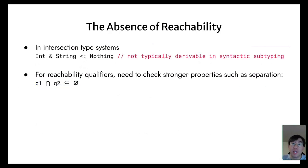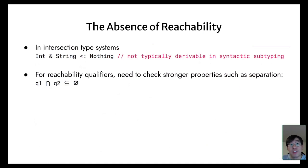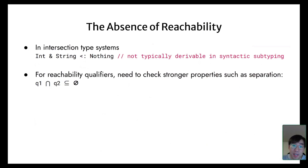In our calculus we can also track the absence of reachability, which is separation. As an analogy with intersection types, this is a stronger property that cannot be derived in typical syntactic type systems. In our system, as a key invariant in the soundness proof, intersection and union of reachability sets are preserved during evaluation, so we can use intersection of sets to check separation. If the intersection of two reachability sets is empty, then they are indeed separate.